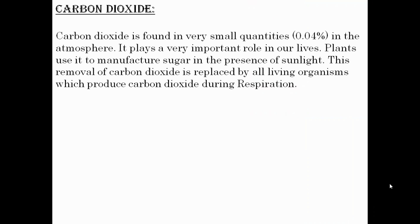Firstly, we will study about the occurrence of carbon dioxide. Carbon dioxide is found in a very small quantity, about 0.04% in the atmosphere. It plays an important role in our lives. Plants use it to manufacture food in the presence of sunlight. The removed carbon dioxide is replaced as living organisms produce it during respiration, so the amount of carbon dioxide in the atmosphere remains constant. Its chemical formula is CO₂.